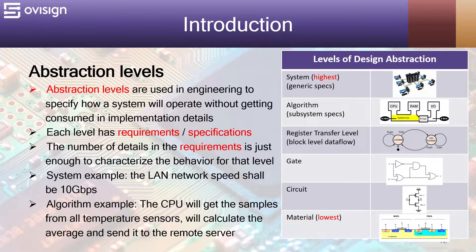The abstraction levels are the following. We have the system level, which is the highest; next, the algorithm level, which is subsystem specifications; next, the registered transfer level, or what happens inside the chip; after this, we have the gate level, the circuit level, and the material level, which is the lowest.